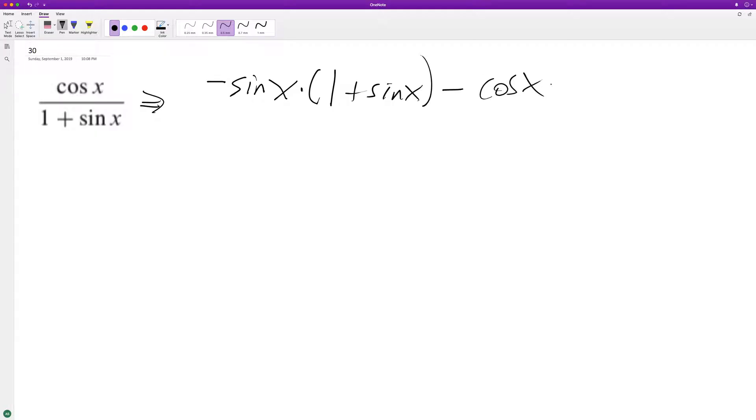Minus the numerator times the derivative of the bottom. So derivative of one is zero, derivative of sine of x is cosine of x, and this is all going to be over one plus sine of x and we square the denominator.